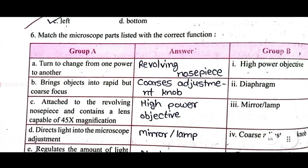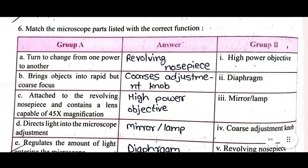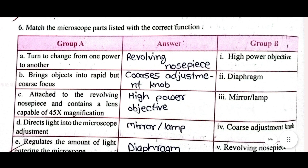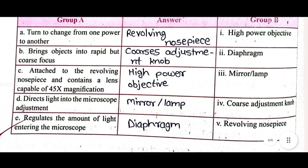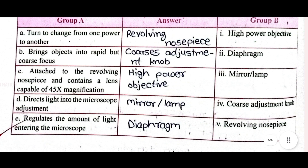The sixth and last question is to complete the table — we have to write the answers in the middle column. These are the answers: revolving nosepiece, coarse adjustment knob, high power objective, mirror or lamp, and diaphragm.